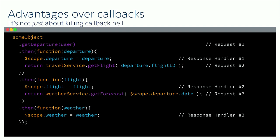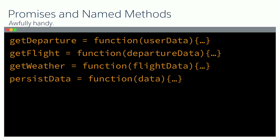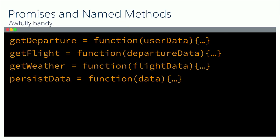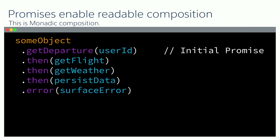Some advantages over callbacks: promises don't exist to help you eliminate callbacks. What they try to do is help you make sense of your asynchronous code. When you use the 'then' method, you can use anonymous functions to call secondary promises. This is from an Angular app I worked on. If you switch over to named functions — like get departure, get flight, get weather, and persist data — you can actually write a promise chain that's a lot easier to reason about and work through.